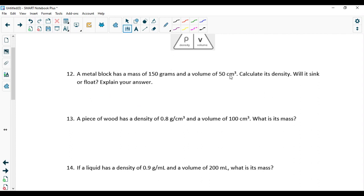So again we will do m equals, v equals, density equals. If we read again: mass 150 grams, volume 50 centimeter cubes. Are the units correct? Yes, grams and centimeter cube, it's good. Will it sink or float? Let's find out.